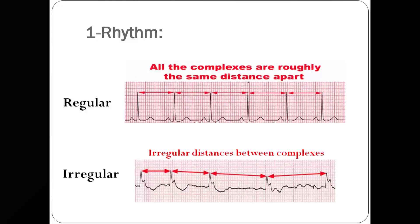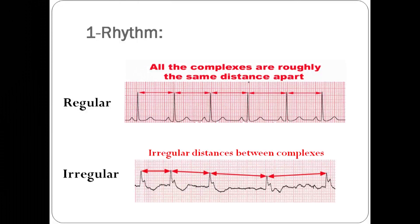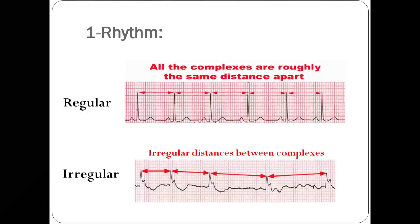For rhythm, we look at the distance between two separate R's on the ECG strip. If the R's are separated at the same distance, then the rhythm is regular. But if the distance isn't equal between them, then it's an irregular rhythm.